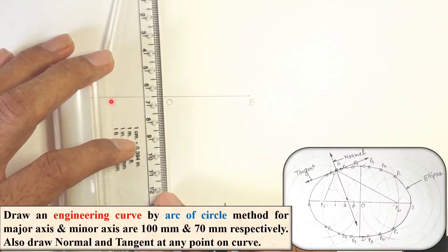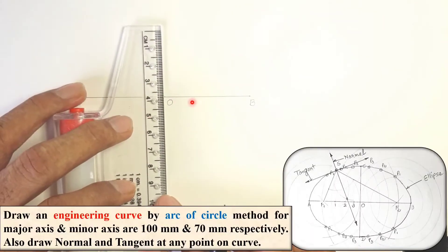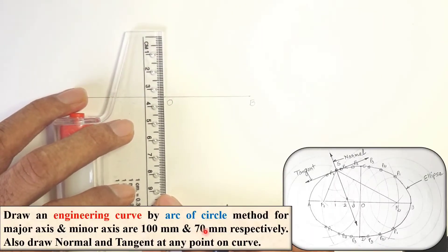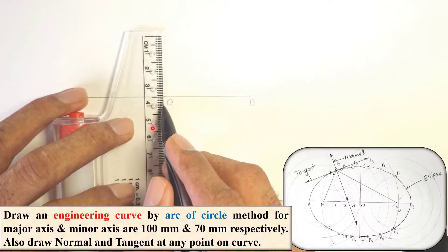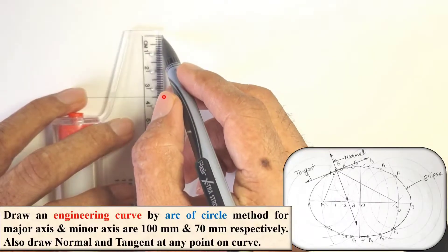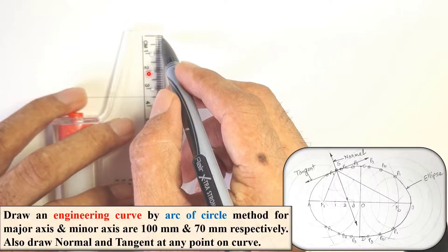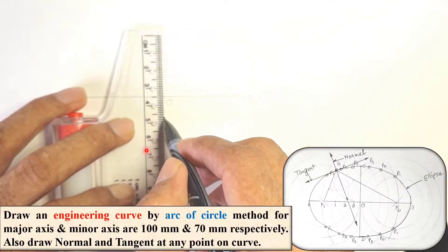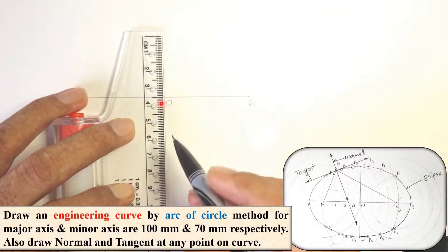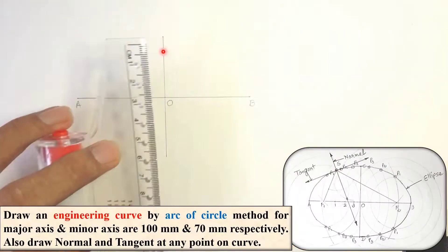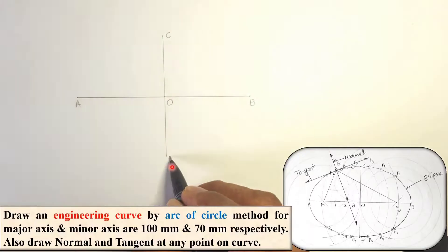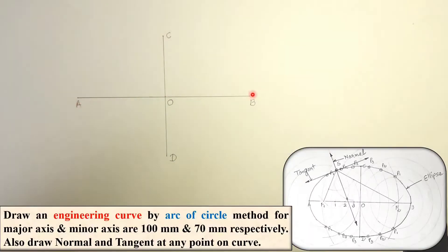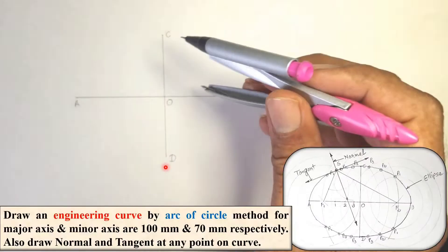Now draw the minor axis perpendicular to the major axis; it is given as 70 mm. Keep in mind that AB must be the bisector of this vertical line, meaning 35 mm above and 35 mm below the AB line, giving a total length of 70 mm. Mark it as CD.